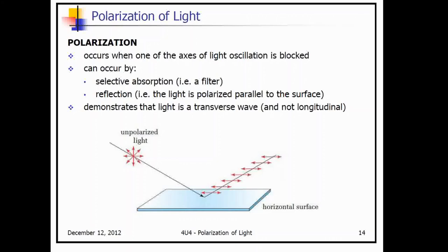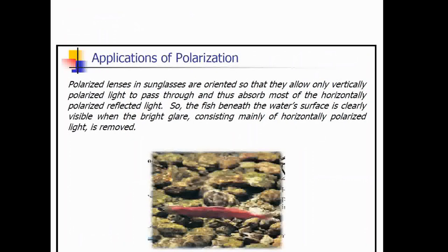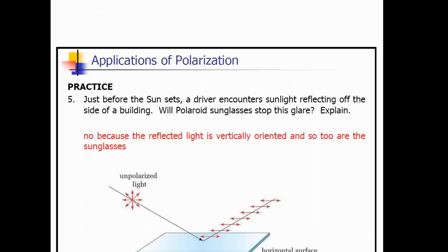This gets back to how we can see inside a stream without seeing reflected light. As light reflects off a horizontal surface, the reflection we see is only horizontally oriented light. If we have sunglasses oriented vertically, they block out that light, which means we wouldn't see any reflection on the surface of a pond. So how do polarized lenses exclusively absorb glare from light reflected off the surface of a stream or the hood of a car? The horizontally polarized light is absorbed by the vertically oriented sunglasses.